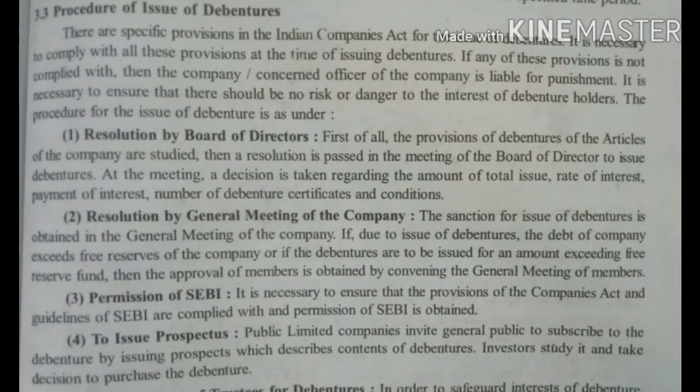Second is resolution by general meeting of the company: the sanction for issue of debenture is obtained in the general meeting. If due to the issue of debenture the debt of the company exceeds free reserves, or if the debentures are to be issued for an amount exceeding the free reserve fund, then the approval of the members is to be obtained by convening the general meeting. Third is permission of SEBI: it is necessary to ensure that the provisions of the Companies Act and guidelines are followed and permission from SEBI is obtained.